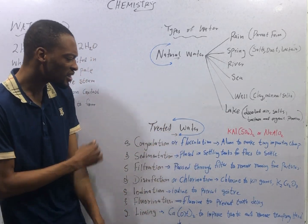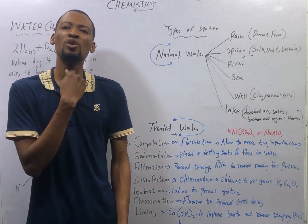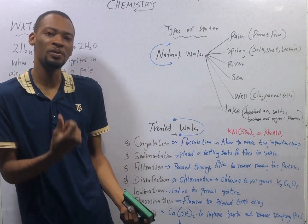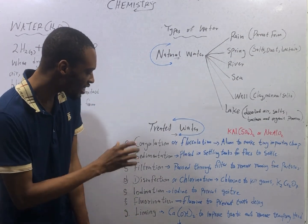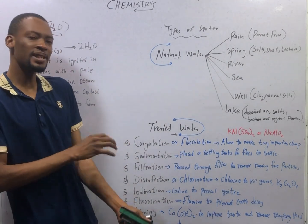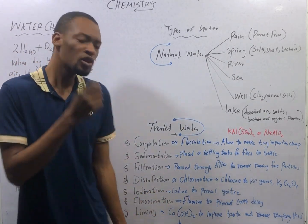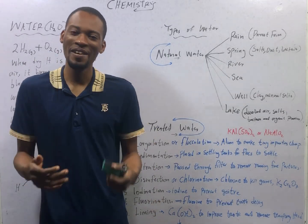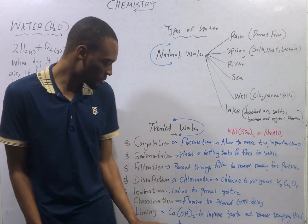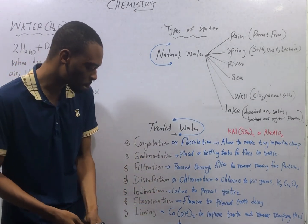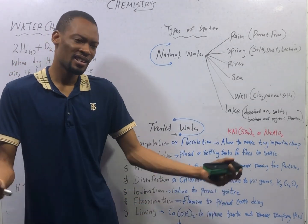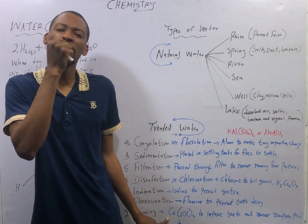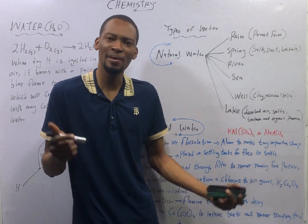Iodination is the process of adding iodine to water to prevent goiter swelling. Iodine helps to prevent goiter. Fluorination is the process of adding fluorine to water to prevent tooth decay, so that you don't drink water and your teeth begin to decay. Liming is the addition of slaked lime to improve taste and to remove temporary hardness.